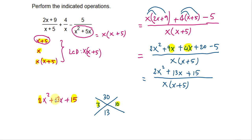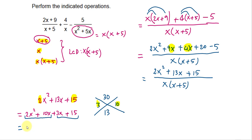We rewrite 13x as 10x plus 3x, so the trinomial becomes 2x squared plus 10x plus 3x plus 15. Now we factor by grouping: from the first two terms, pull out 2x to get 2x times x plus 5. From the last two terms, pull out 3 to get 3 times x plus 5. Both groups share the common factor x plus 5.